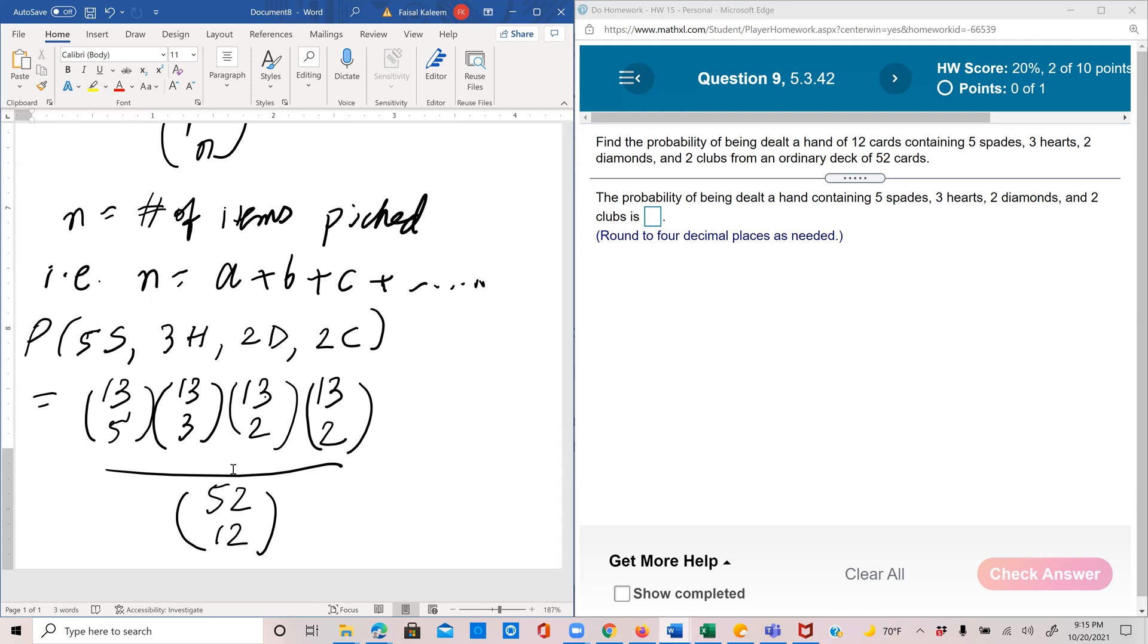So 13 combination 5 times 13 combination 3 times 13 combination 2 times 13 combination 2. So 13 combination 2 is 78.